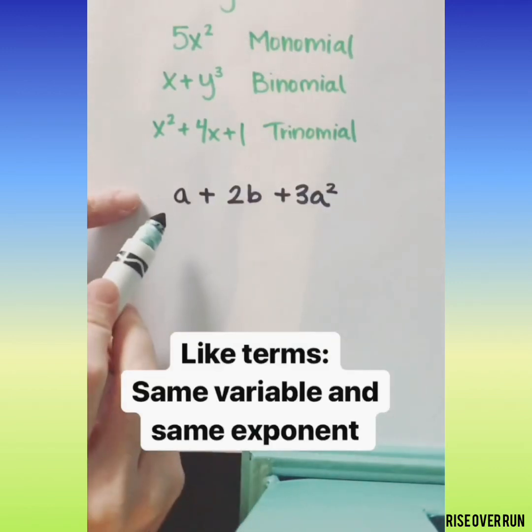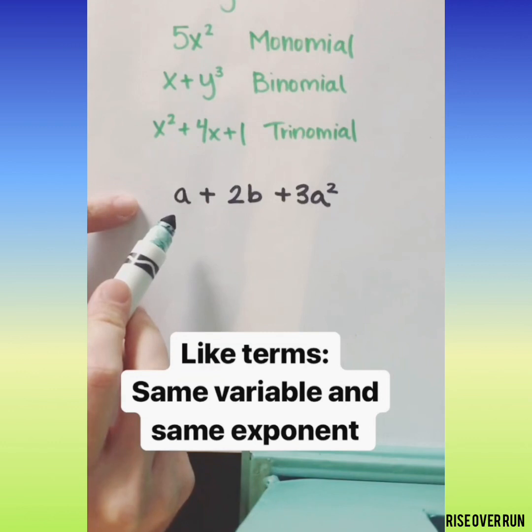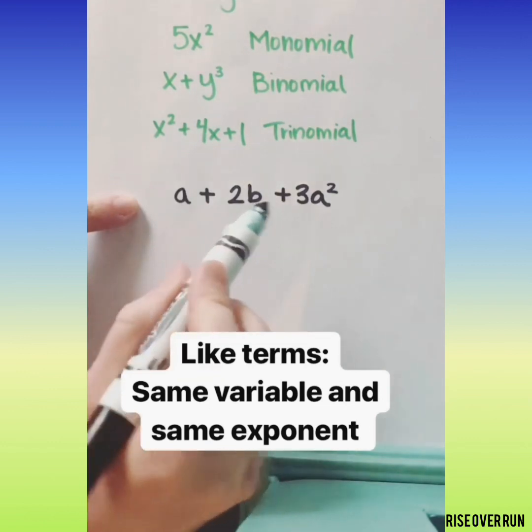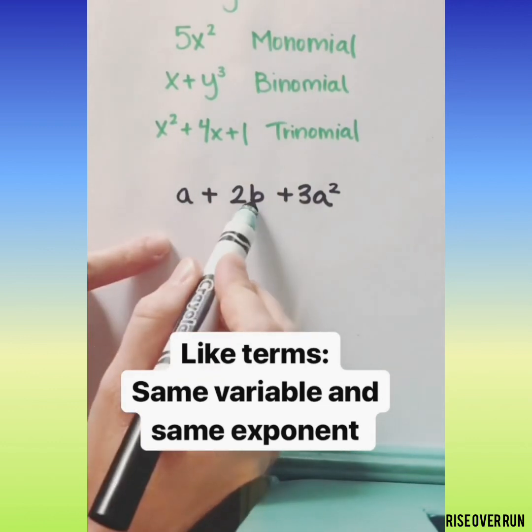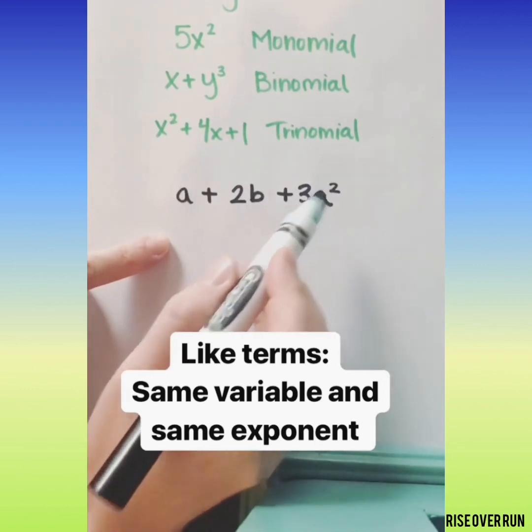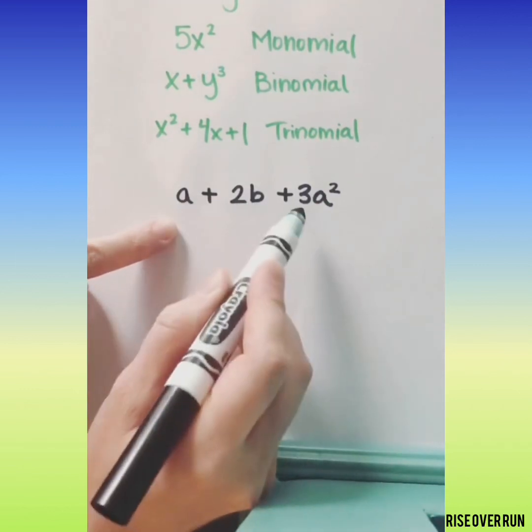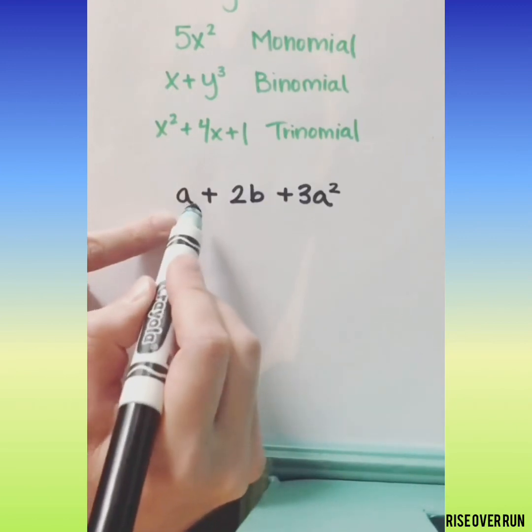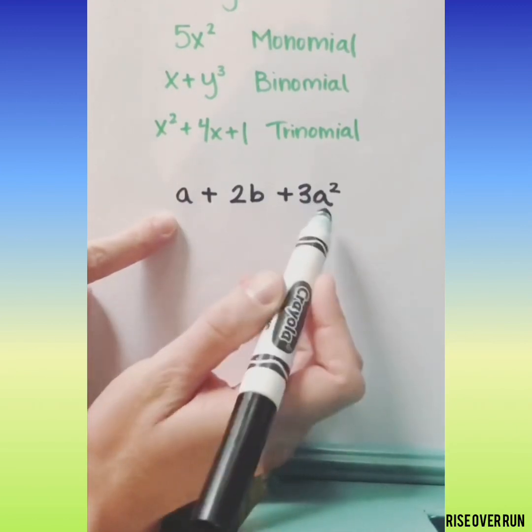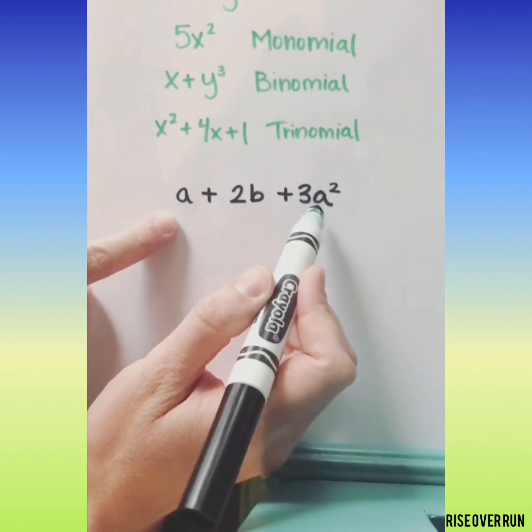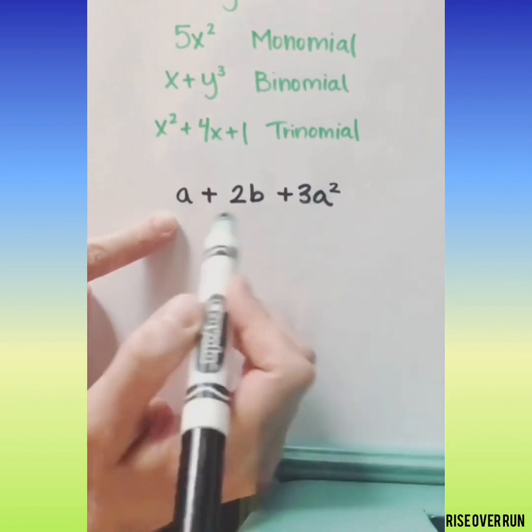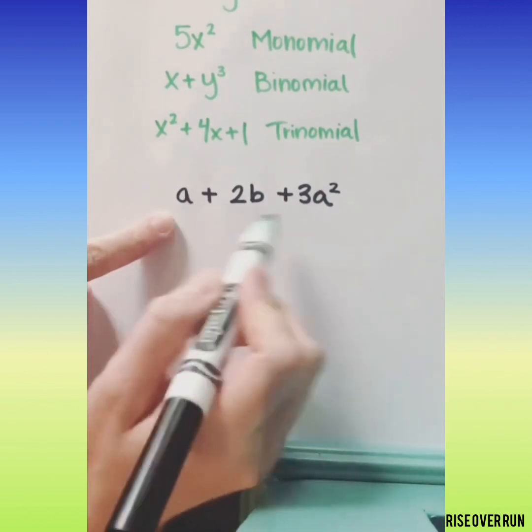Let's see if we can simplify this polynomial. Whenever we try to simplify, we're looking for like terms. Like terms have the same variable and the same exponent. So in this case, none of these are like terms. Even this one and this one that both have the same variable, they don't have the same exponent, so they're not like terms and we cannot try to combine them.